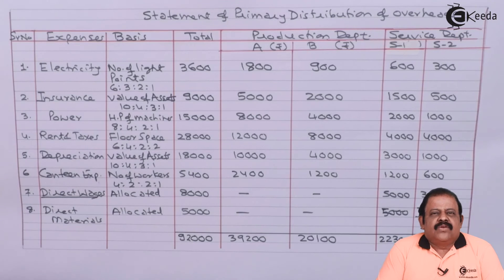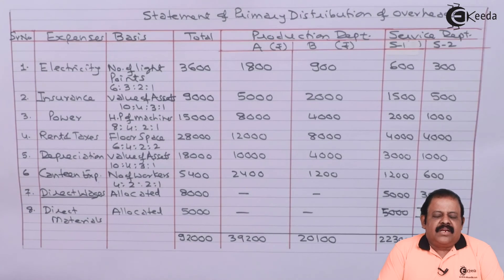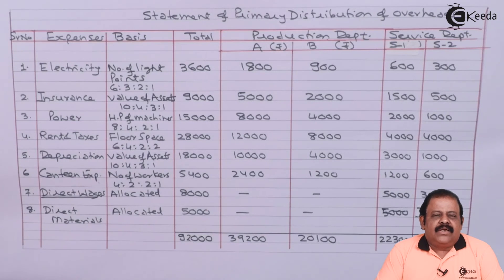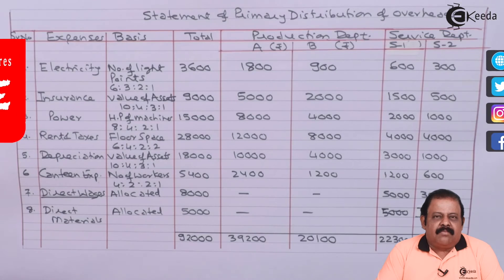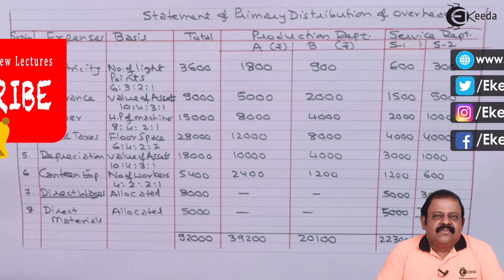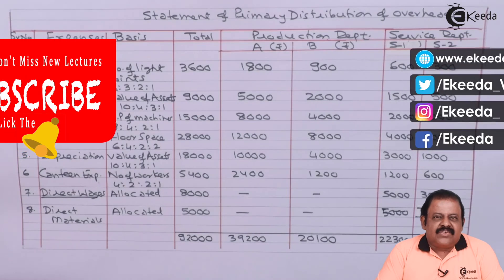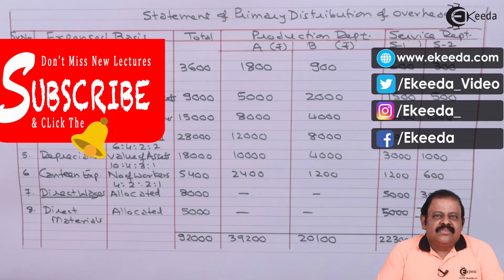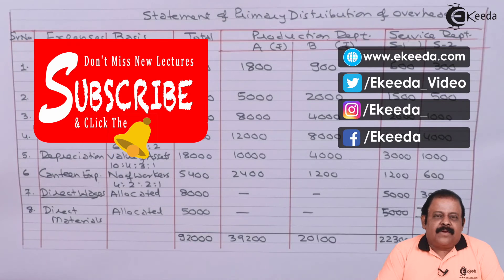In this question we have learnt how to prepare primary distribution of overheads when two production departments and two service departments are given. Thanks for watching this video. Stay tuned with Ikeda and subscribe to our channel Ikeda.